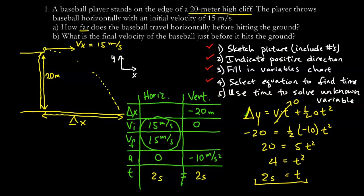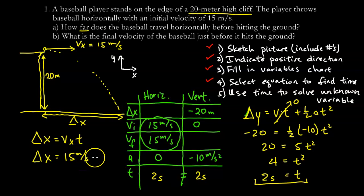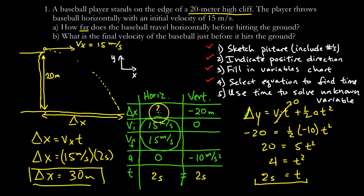Now I shift focus to horizontal motion to find how far the baseball travels. Using the constant velocity equation: delta x equals v_x times t. The horizontal velocity is 15 meters per second and the time is 2 seconds, so the horizontal displacement is 30 meters. The baseball travels 30 meters horizontally.